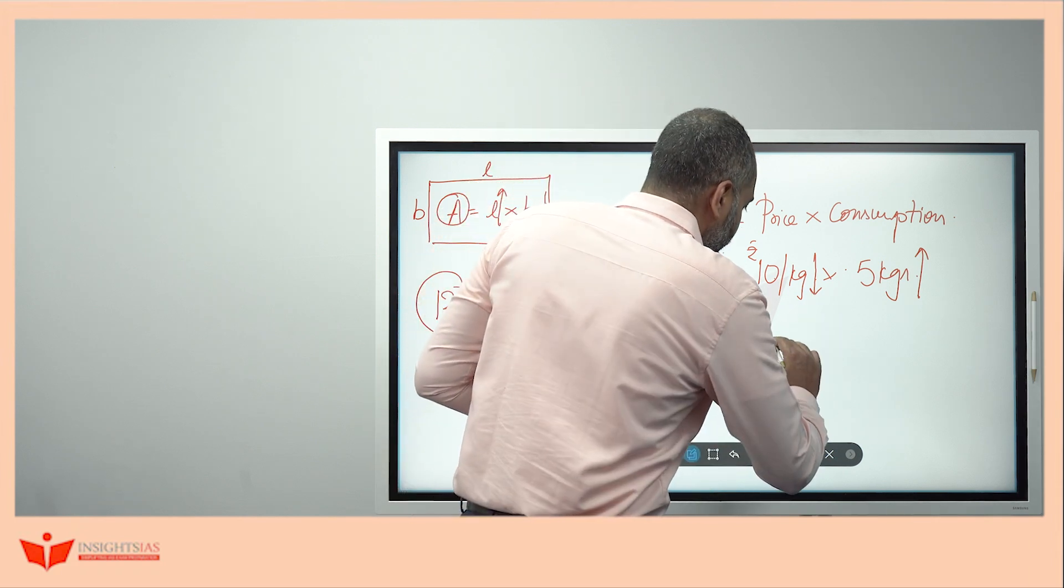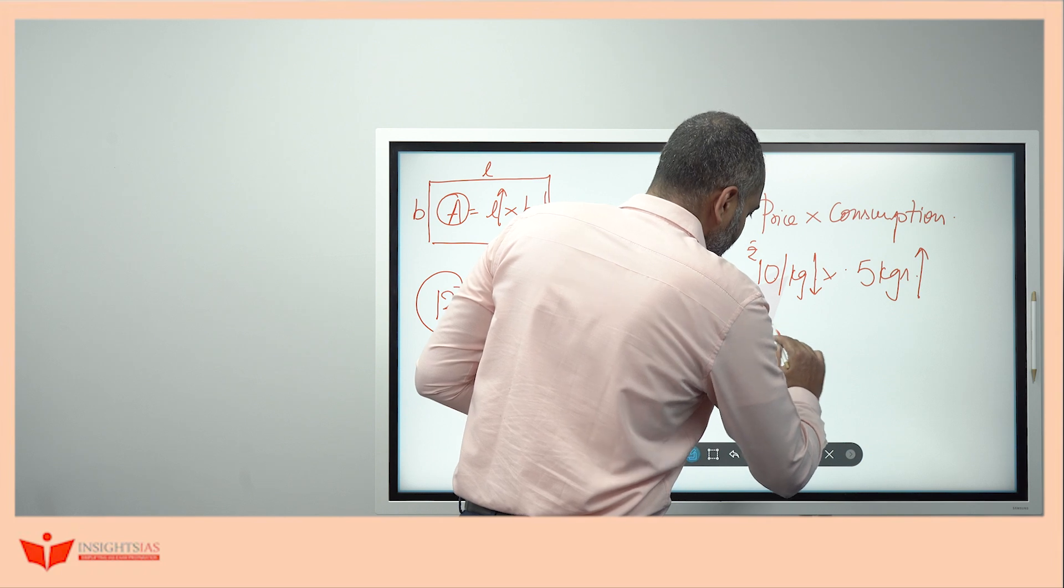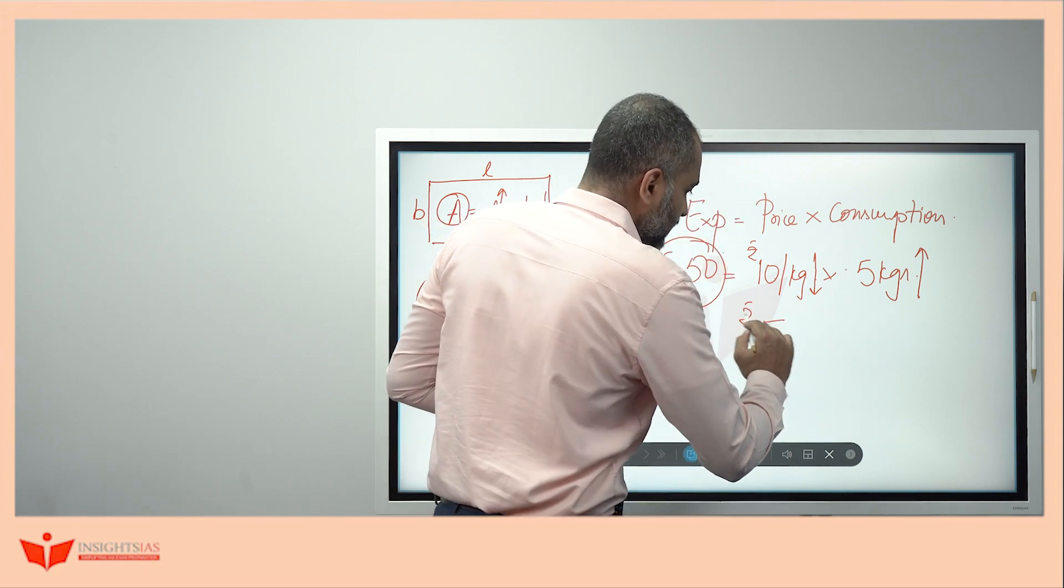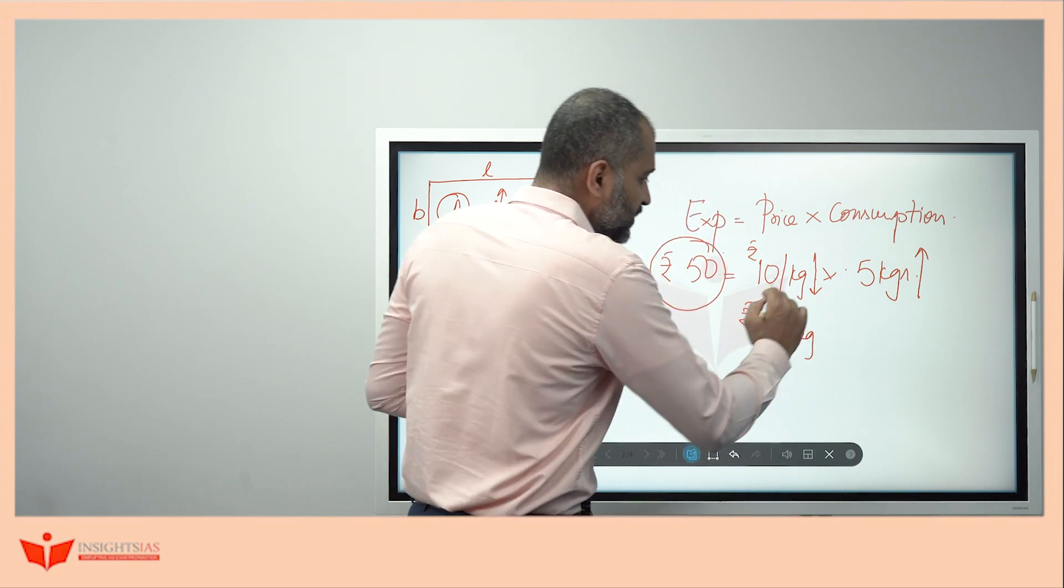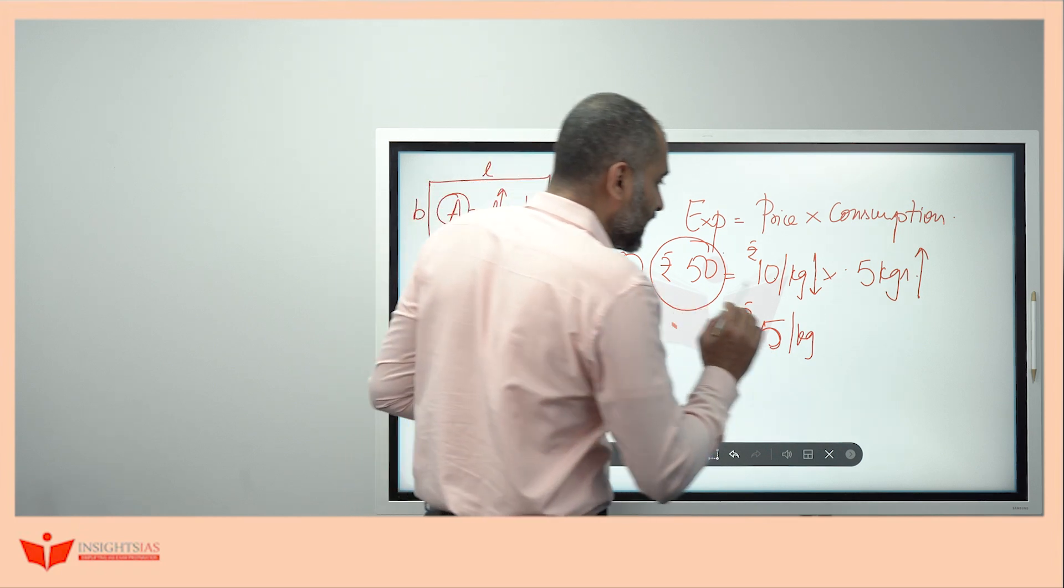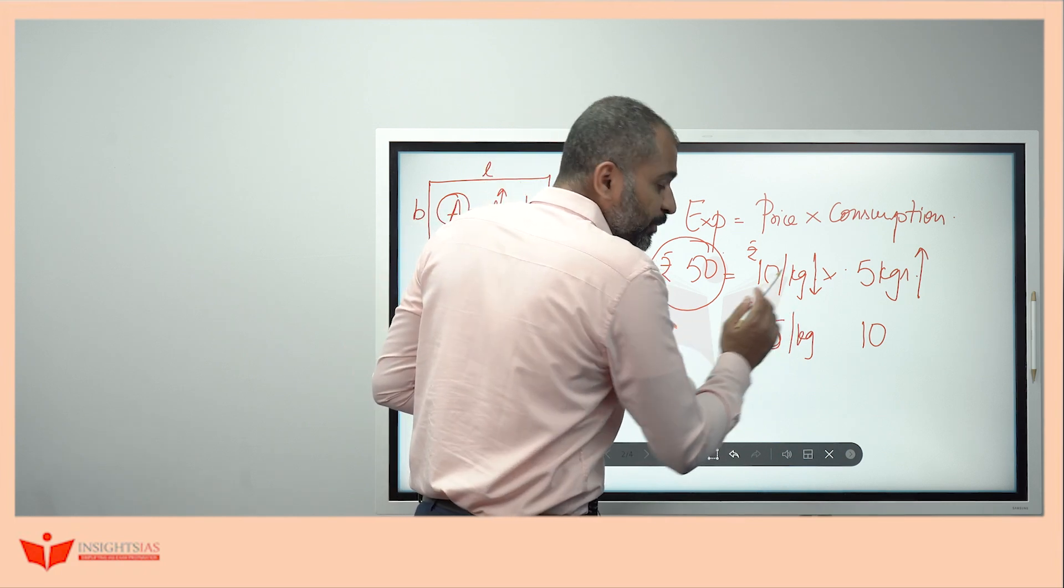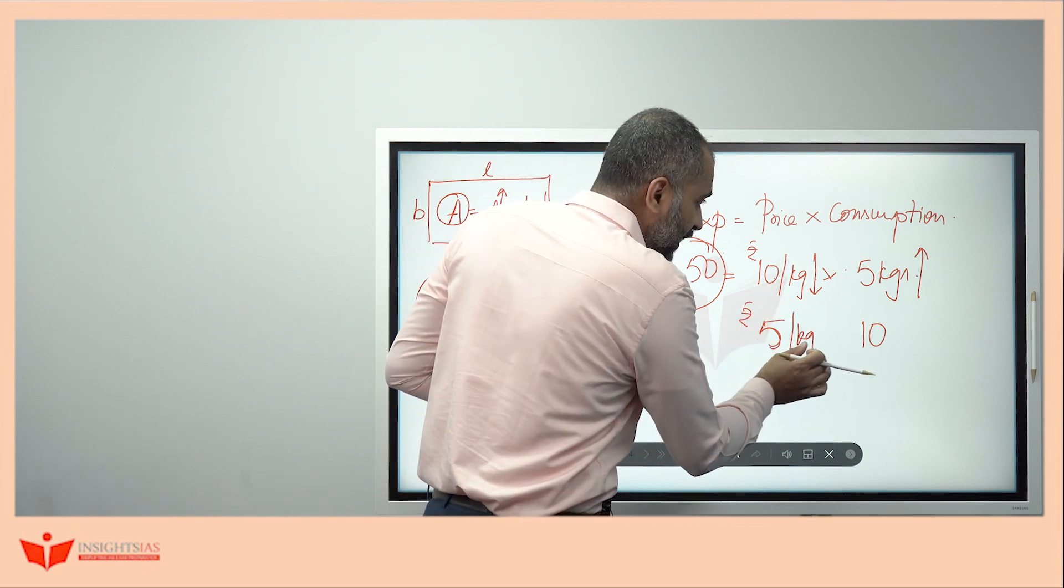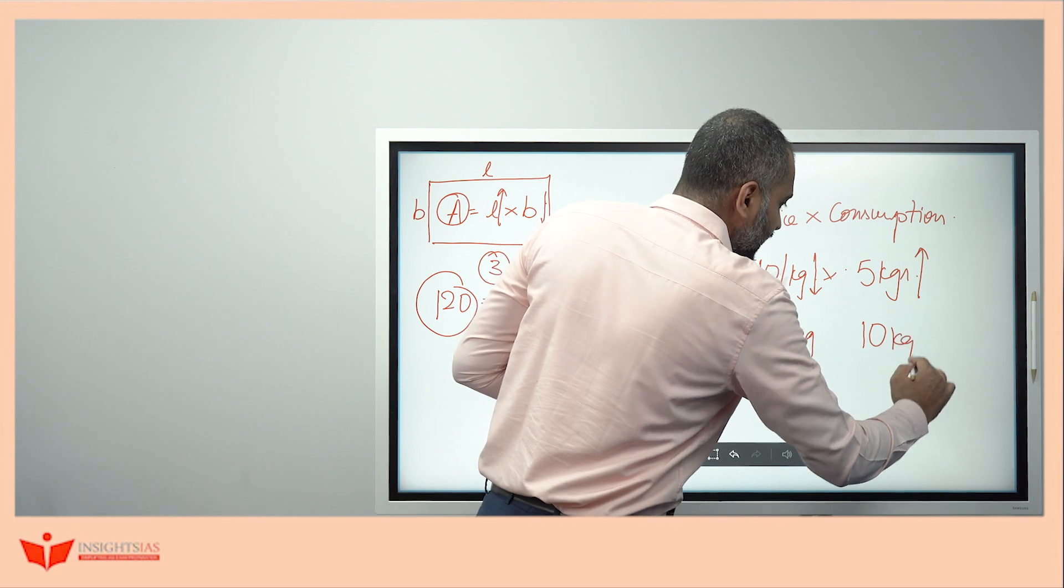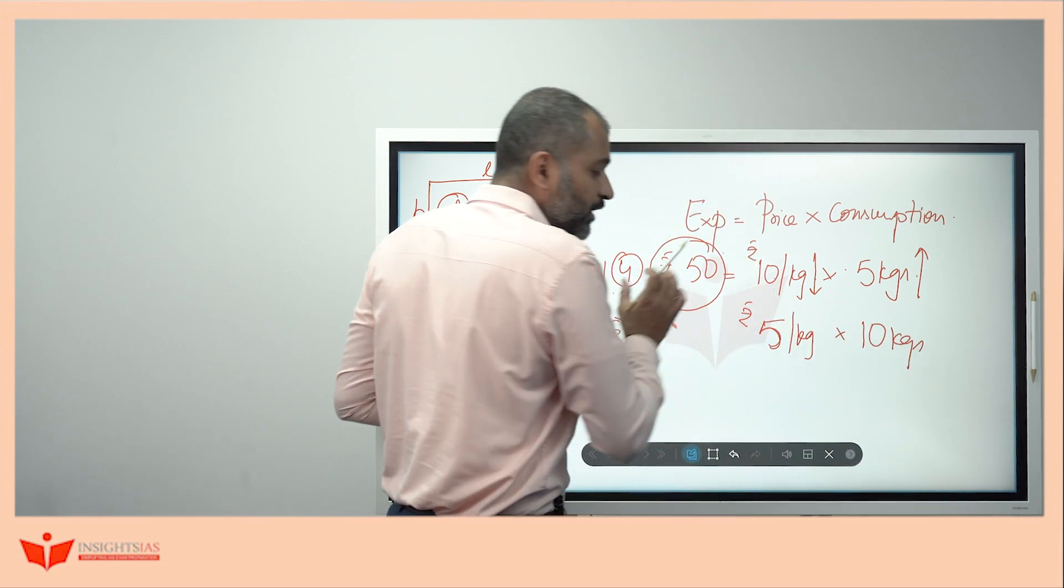Now, if you keep this expenditure same, if the price is decreased, the consumption has to increase. If the price goes down, you will buy more quantity of onion in the same price. Now, if this comes down to 5, rupees 5 per kg. If 10 changes to 5, then this has to change 5 to 10. At the place of 10 rupees per kg, if it becomes 5 rupees per kg, so you'll get 10 kgs. The product of these two also remains same.